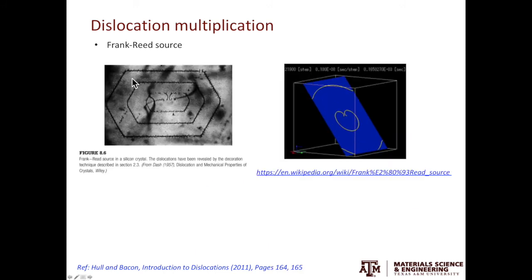The micrograph on the left is a classical example showing how the Frank-Reed source operates in a silicon single crystal. You can see it in many textbooks talking about dislocations and deformation. The example on the right is a GIF from Wikipedia showing how the Frank-Reed source operates dynamically.